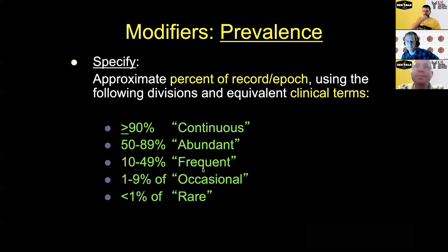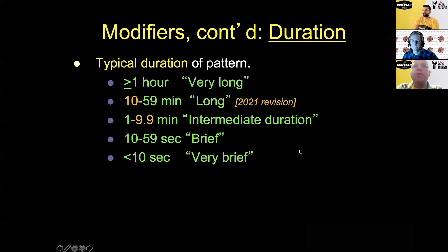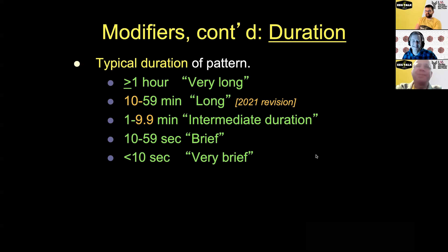If you see rhythmic delta activity intermittently in a record and add it all up, the percent of the record is prevalence — also called burden. Seizure burden or burden of a pattern really refers to prevalence. Duration is how long a given instance lasts. If it usually lasts five seconds, it's very brief, even if you have lots of them — you can have a high burden of very brief episodes.